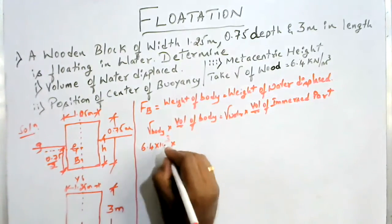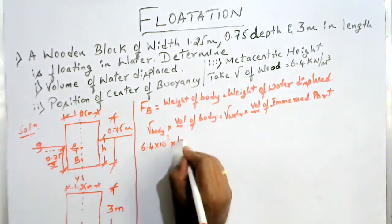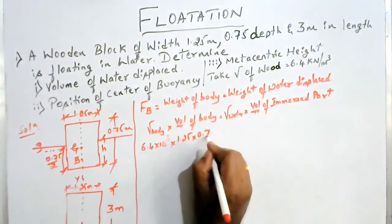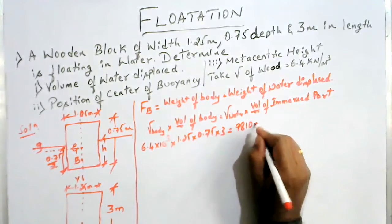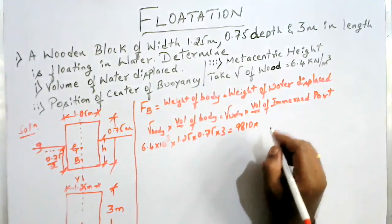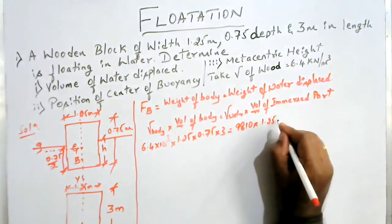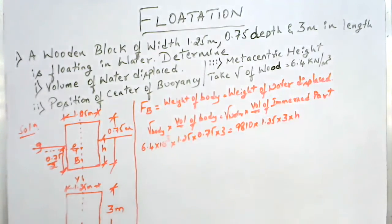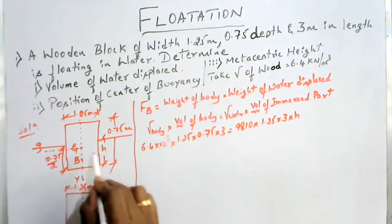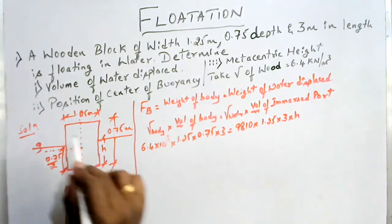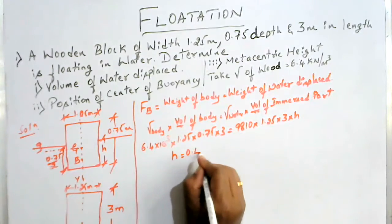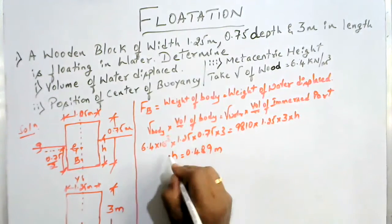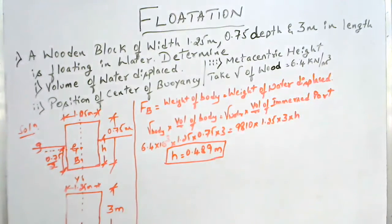So 6.4 × 10³ multiplied by the volume of the body — that is 1.25 × 0.75 × 3 — equals gamma of water, which is 9810, multiplied by volume of the immersed part: 1.25 × 3 × h, where h is the depth of immersion. If you simplify this equation you will get h equal to 0.489 meter.